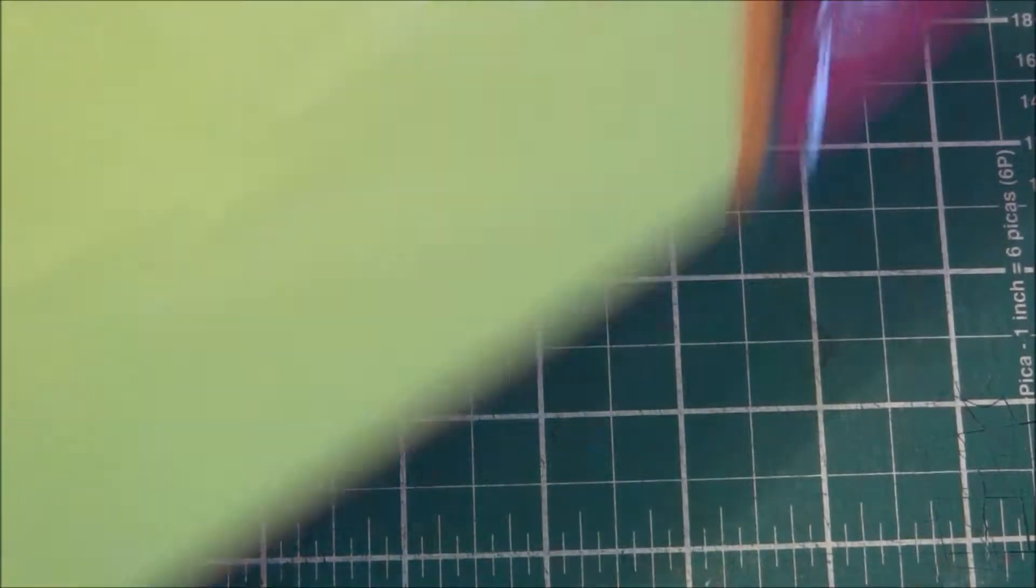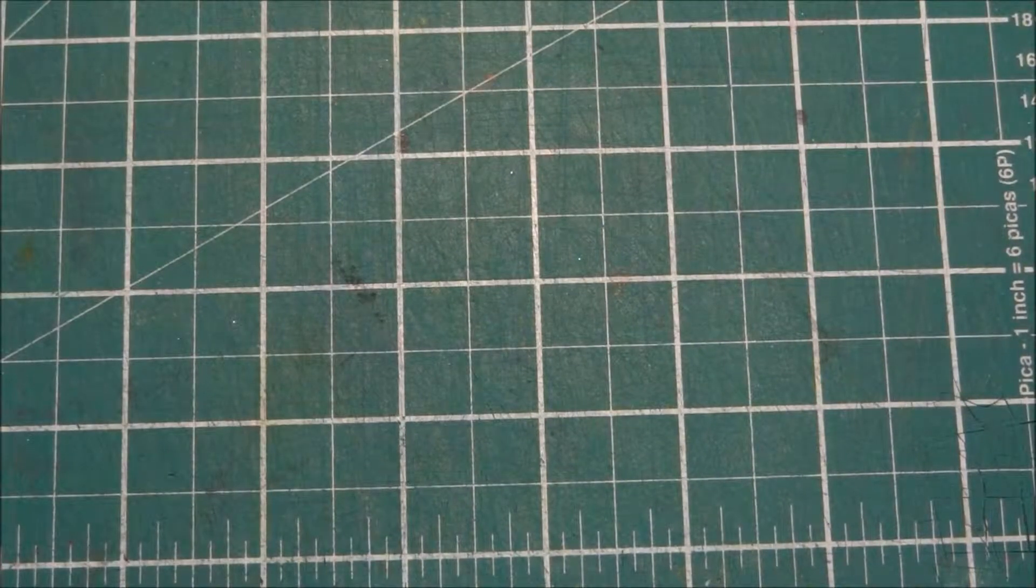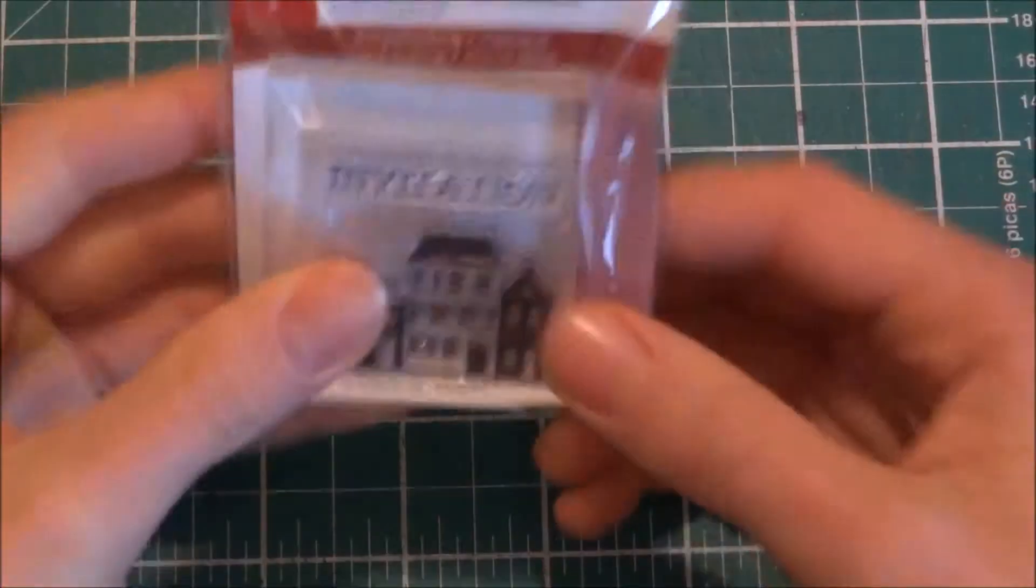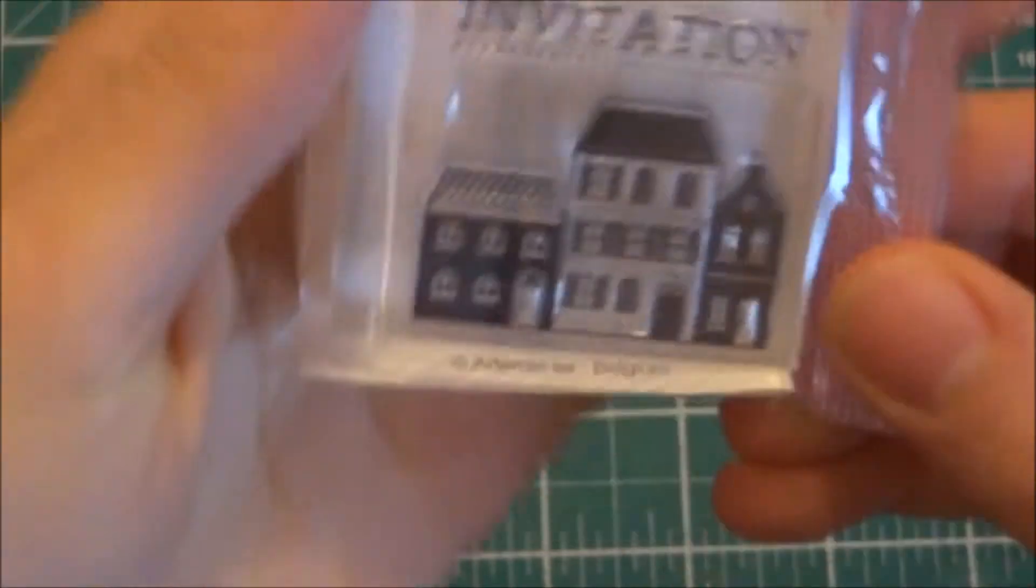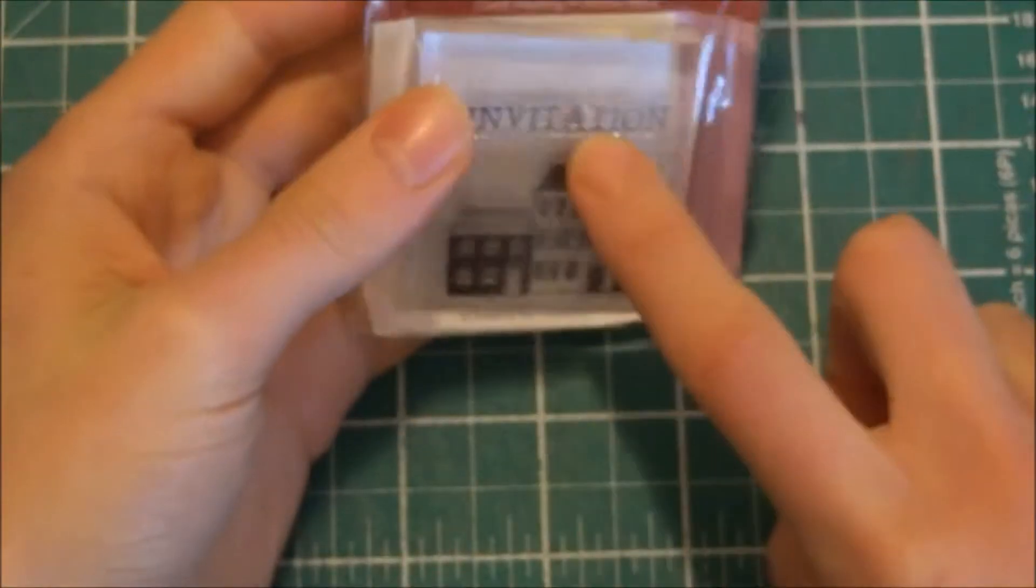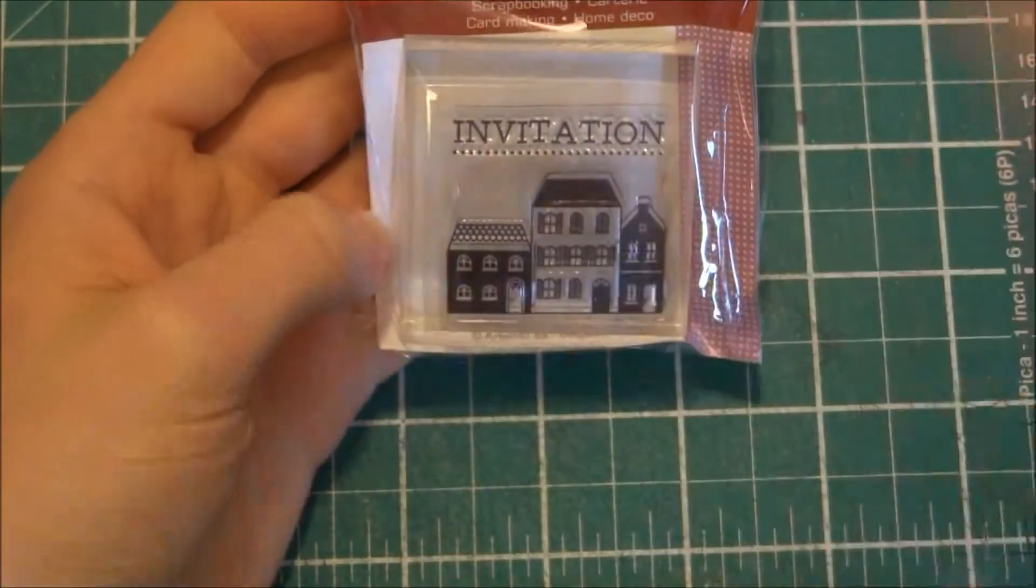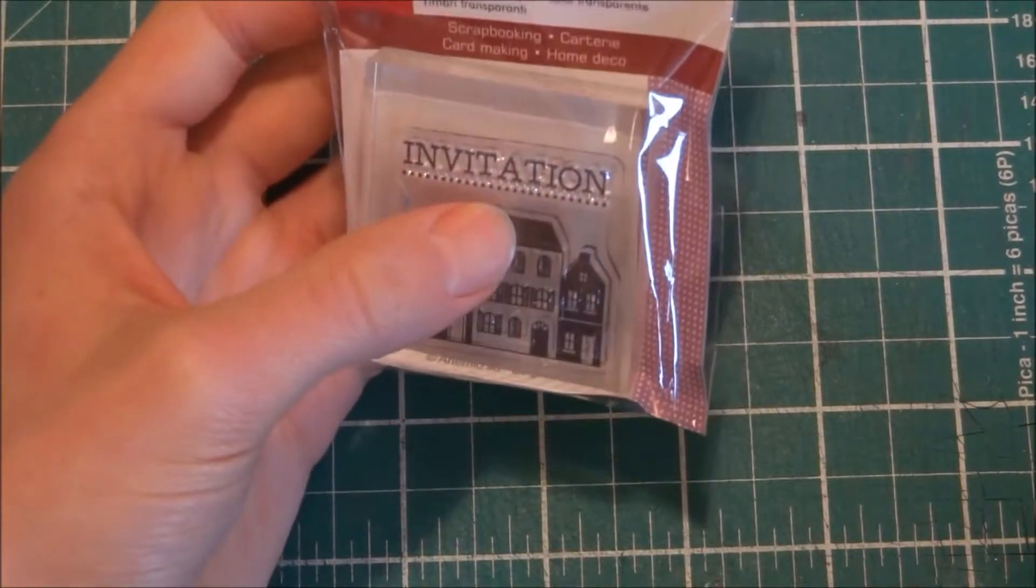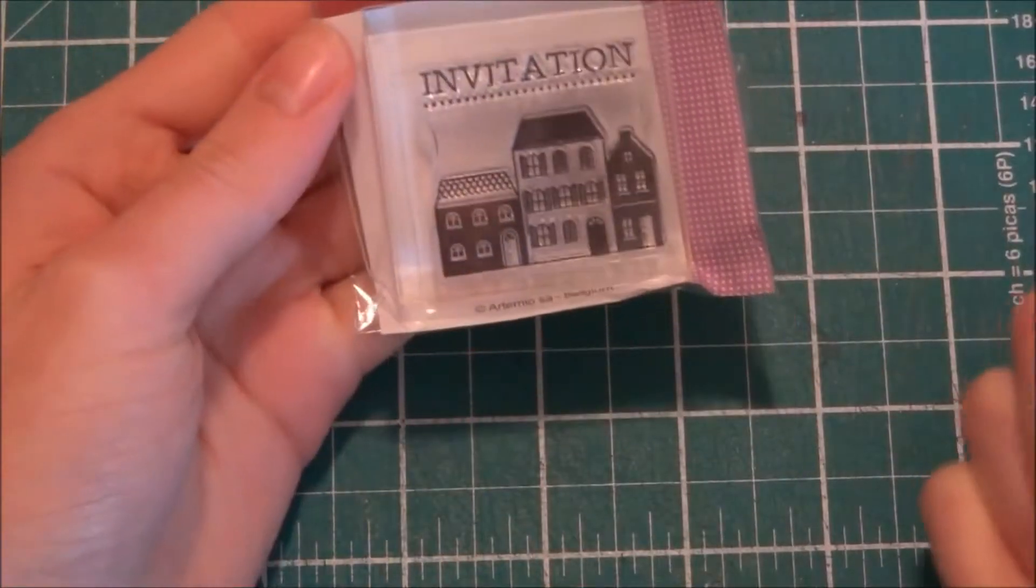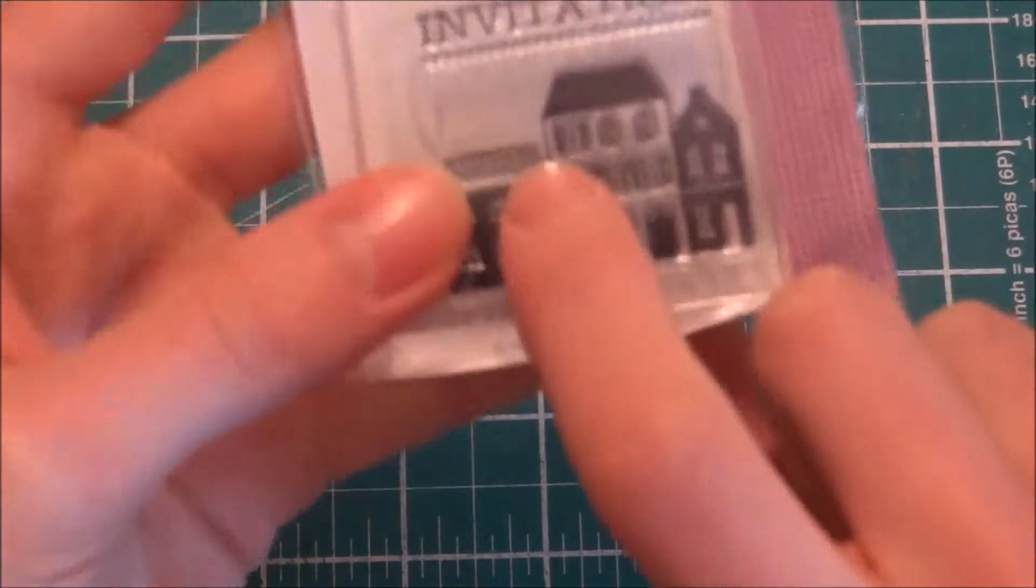The second thing I bought was this Artemio stamp set. I've been looking for a smaller acrylic block because I have a 4x6 acrylic block by Paper Mania and it's not good for small stamps, so I got this one. It also came with a house stamp.